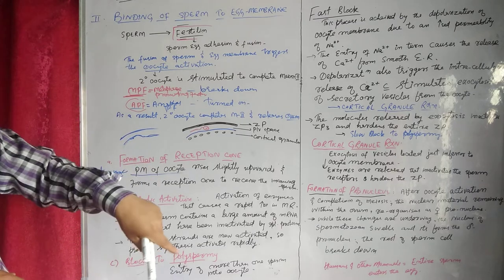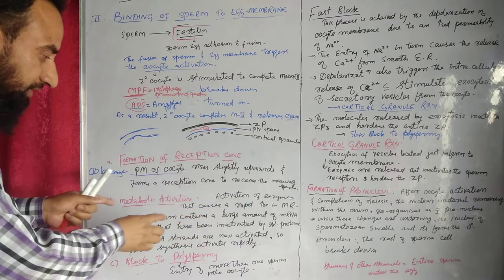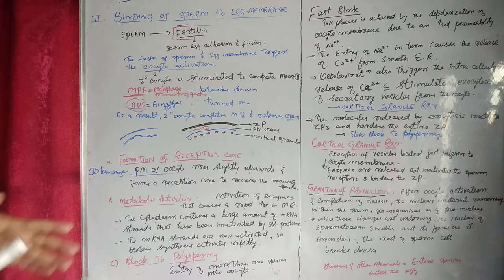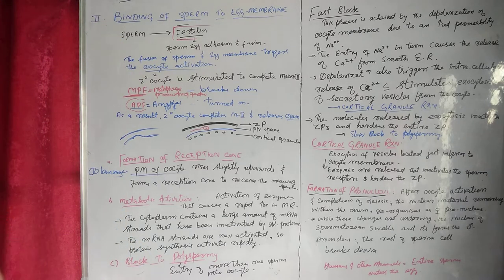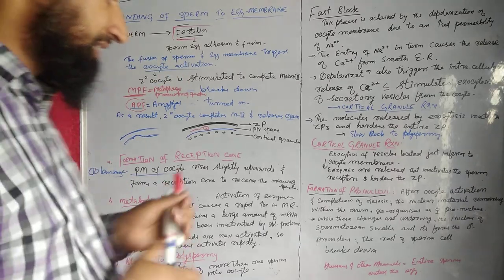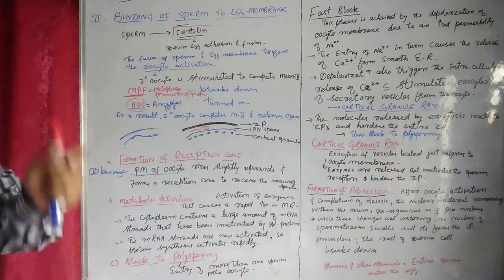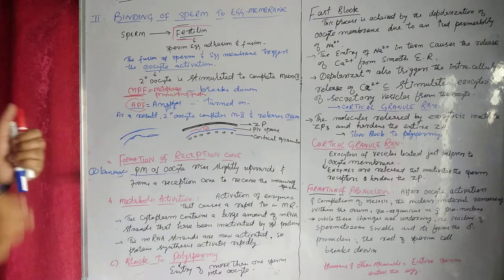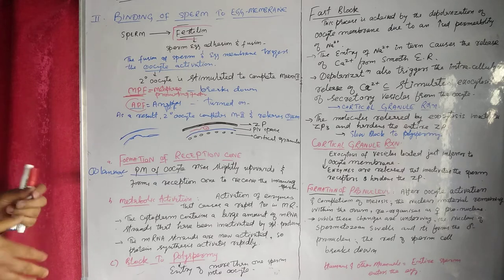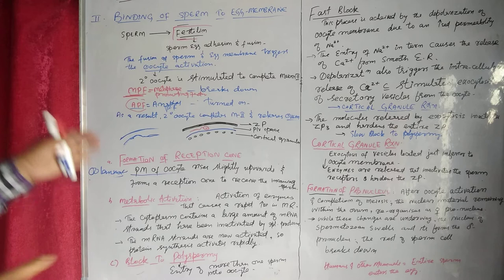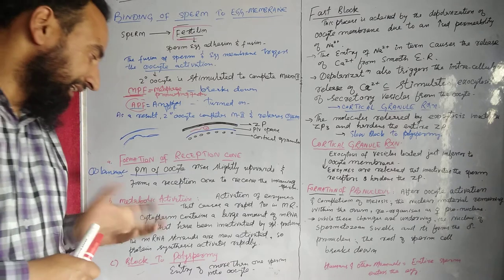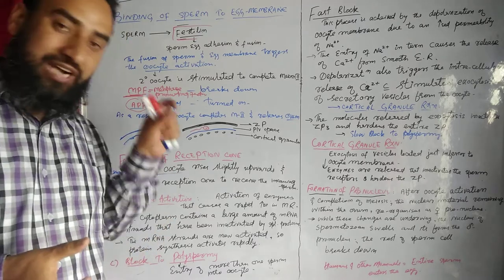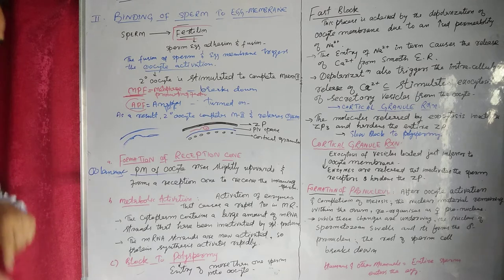Upon entering into the secondary oocyte, there is an activation of enzymes that causes a rapid increase in metabolic rate. Enzymes that were previously deactivated become activated. The cytoplasm actually contains a large amount of mRNA strands in inactivated form. Those inactive mRNA strands are activated by special proteins, causing a rapid increase in metabolic rate. This is how metabolic activation takes place.